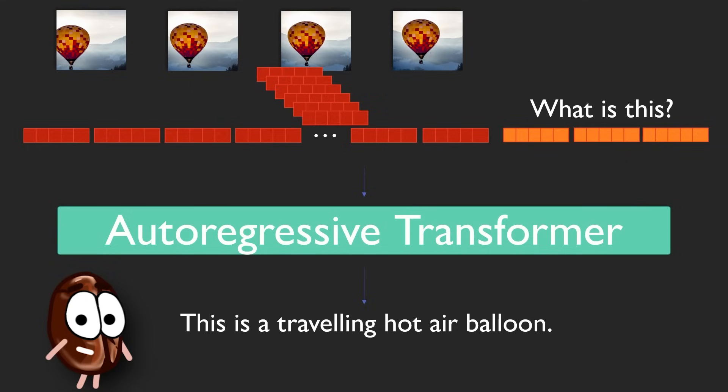But here's the problem: even for short clips, this creates an enormous sequence of tokens. And as the video gets longer, the sequence length explodes quickly, overwhelming the model's capacity.